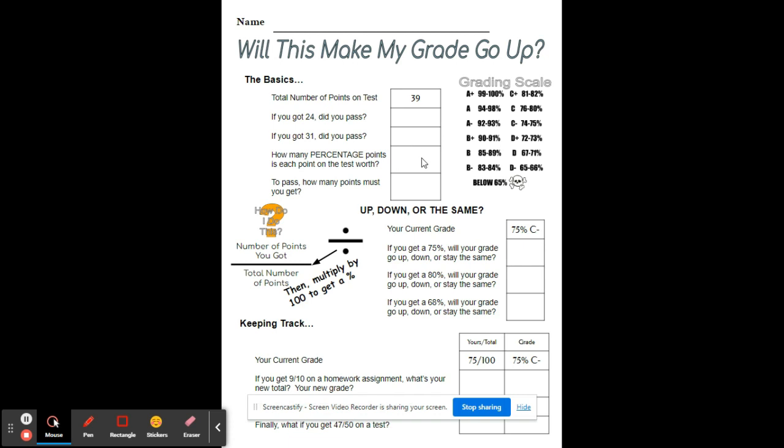For this one, there are 100 total percentage points always, right? Everything's out of 100%. So we want to know this test: 100% divided by the 39 points, and that will give you your answer right here.